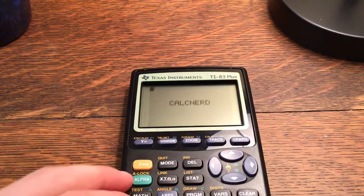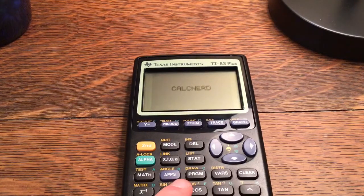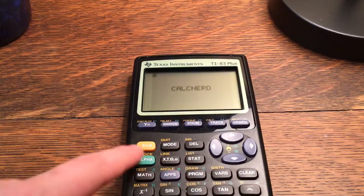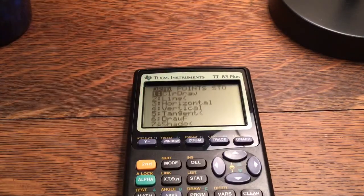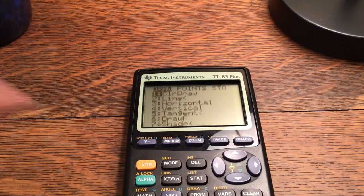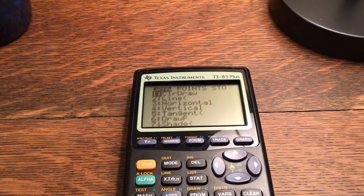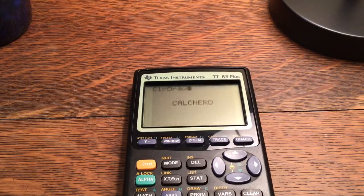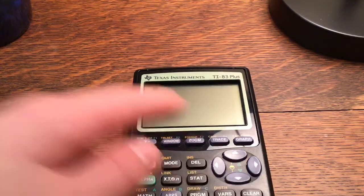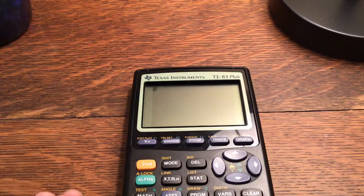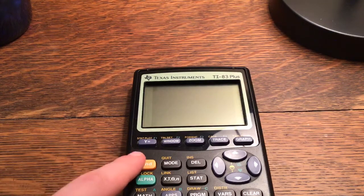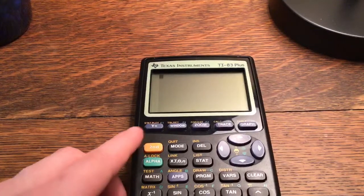So let's get right into it. To draw, don't hit the program button, hit second program, which has draw above it. Then you're going to want to clear draw unless you have a picture that you want to save. I personally don't have anything on there right now, but I do have a picture saved. So I'll show you how to save a picture and recall it to further edit it.